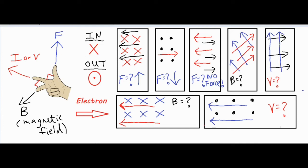For the fourth example, I point my pointer finger toward the top-right of the screen. This time the question is slightly different — I'm not looking for force. I line up my thumb with the blue arrows, and now my middle finger gives me the magnetic field direction. With my pointer finger to the top-right and thumb to the top-left, my middle finger points into the screen. So the answer is X — the magnetic field is directed into the screen.